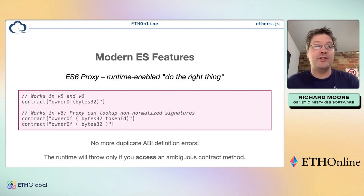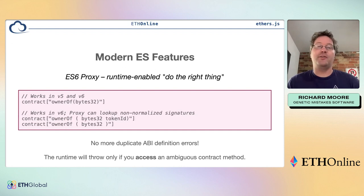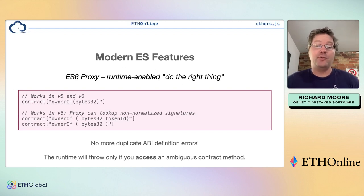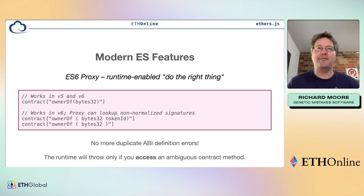Another really cool feature — back in the day using Python, this was built into the language — ES6 Proxies are awesome. Basically, it's an object that when you call a method that doesn't exist, instead of just failing, the Proxy gives code a chance to decide: do I want to do something or do I want to fail? In v6, one big thing we do with this is contracts — they can take a property you're trying to access and make better-educated guesses about what you're actually trying to do.